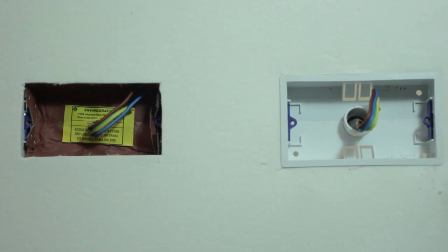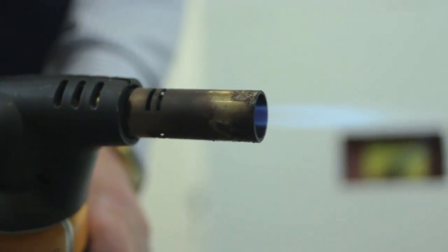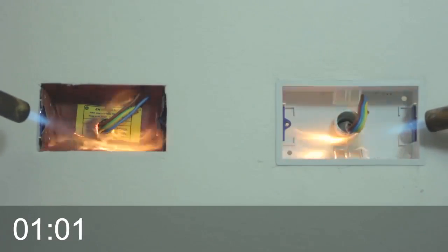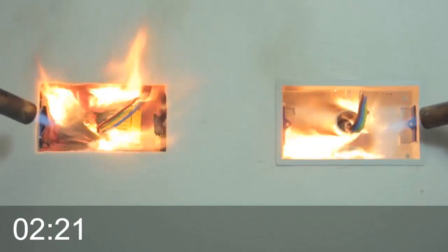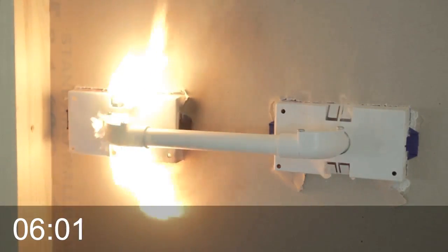Here are two double gang sockets. The one on the left is fitted with our fire and sound trap protection. The one on the right is unprotected. Look at what happens when they are both exposed to a 700 degree flame for just a few minutes.